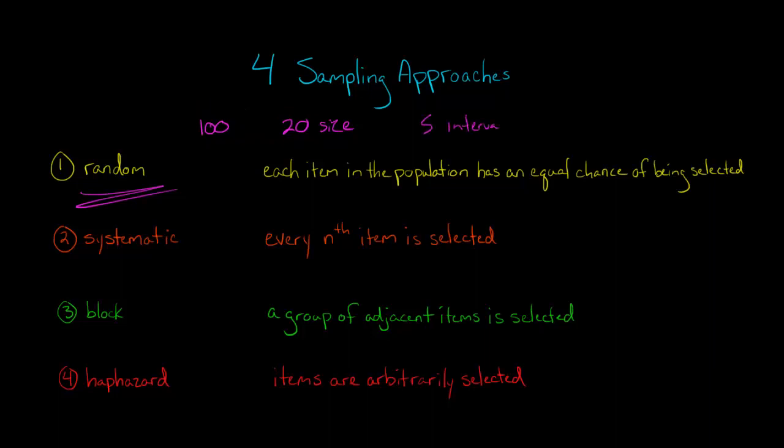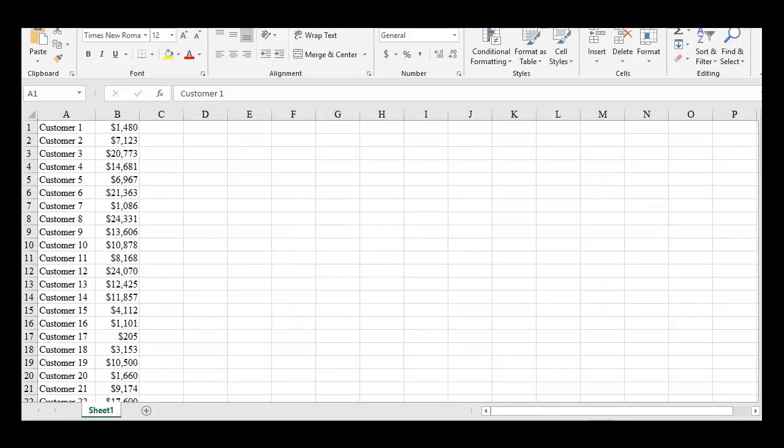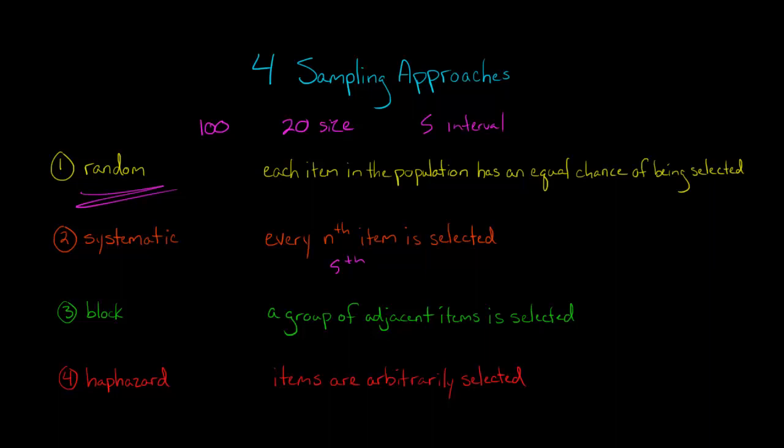And so every fifth item from the population is going to be selected for the sample. So let's go back here. So we would have customer 5 would be selected, customer 10, customer 15, and so forth. So that's basically how it goes. If we wanted a different sample size, if we wanted just a sample size of 10, and we have 100 in our population, then our sampling interval would be 10. So every tenth item from the population would be selected for the sample.